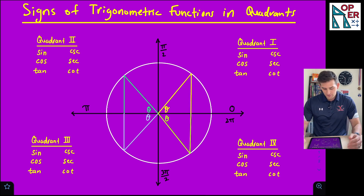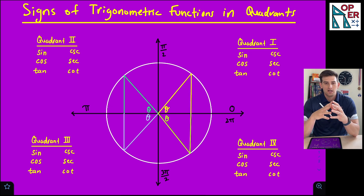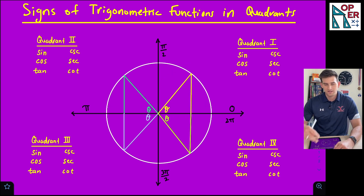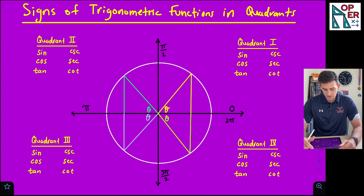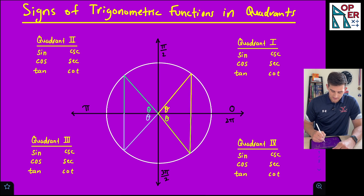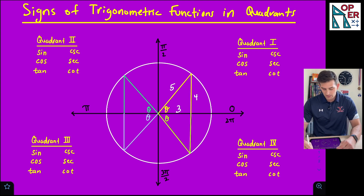If you look at the center of the screen, we have in white our circle — we could call it our unit circle. The radius is not going to be one in this case because I'm going to give us a Pythagorean triple to work with. In quadrant one we have a yellow triangle. The six trig functions are sine, cosine, tangent, and their inverses: cosecant, secant, and cotangent. Let's say we have a 3-4-5 Pythagorean triple: a distance of three along the x-axis, four on the y-axis, and our hypotenuse or radius is five.